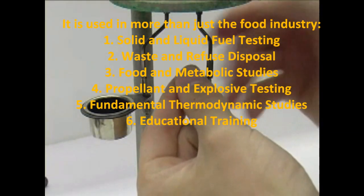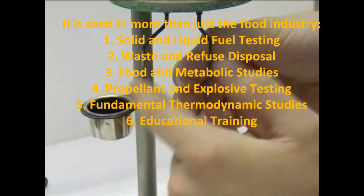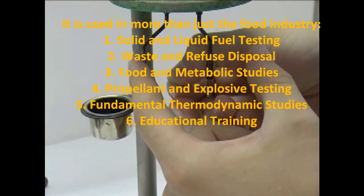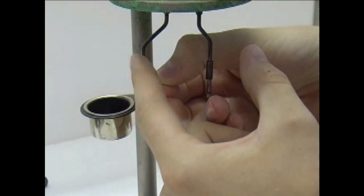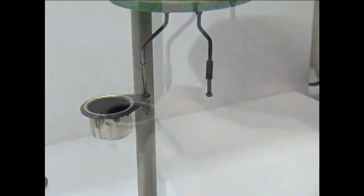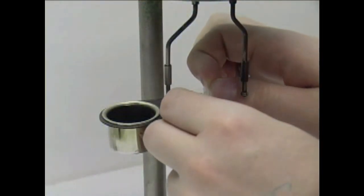The sidearms have sleeves and a fuse wire can be fed through a hole in the sidearms and clamped in place with the sleeves. A piece of cotton is then tied to the fuse wire and fed into the crucible, and the liquid sample then added to the crucible.